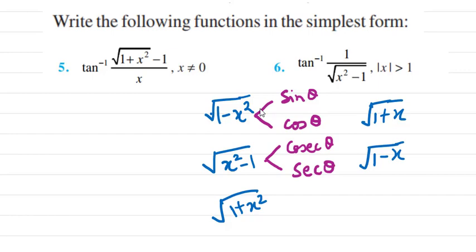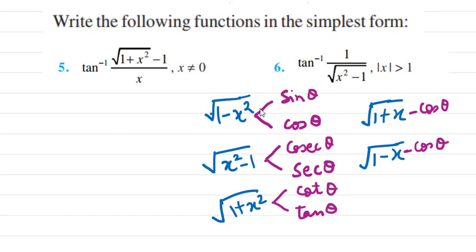If you have x²−1, you can take x as cosθ or secθ. If you have 1+x², you can take x as cotθ or tanθ. If you have 1+cosθ, it can be written as 2cos²(θ/2), and 1−cosθ can be written as 2sin²(θ/2), so the root gives 2sin(θ/2).